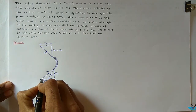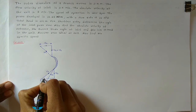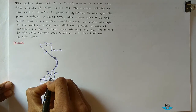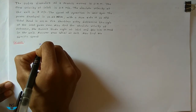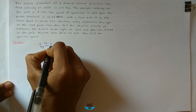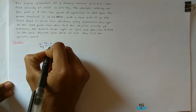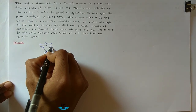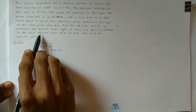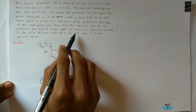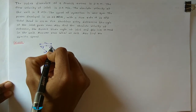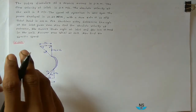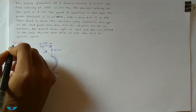Alpha is the Guide Vane Angle at Inlet. This is the Vane Angle at Inlet (theta). This is the Vane Angle at Outlet, and this is the Guide Vane Angle at Outlet. For Zero Whirl at Exit, Beta is equal to 90 degrees. This is the Inlet and Outlet Velocity Triangle for the Francis Turbine.